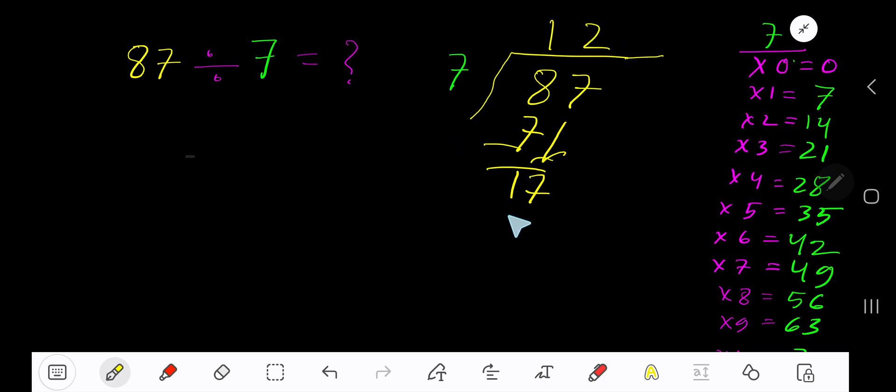Subtract. You are getting 3. So our answer is 12 remainder 3. If you want to write your answer in decimal form, then add zeros.